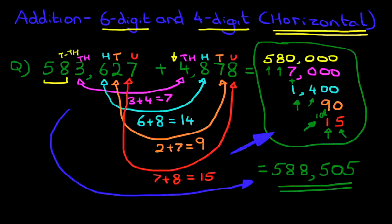And that is the addition of a six-digit number with a four-digit number using the horizontal format. The way to do this is simply practice, practice, practice.